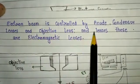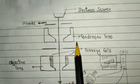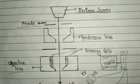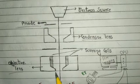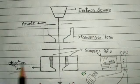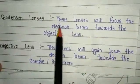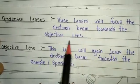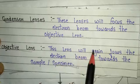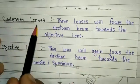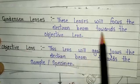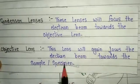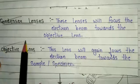Two types of lenses are used: condenser lens and objective lens. Both are electromagnetic lenses. The condenser lens focuses the electron beam toward the objective lens. So when the electron gun produces the electron beam and the anode accelerates it, the condenser lens focuses it toward the objective lens. The objective lens then again focuses the electron beam toward the sample or specimen.